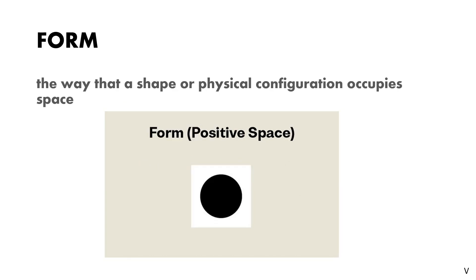Third element of design is form. Form is the way that a shape or physical configuration occupies space. This can be two-dimensional or three-dimensional.